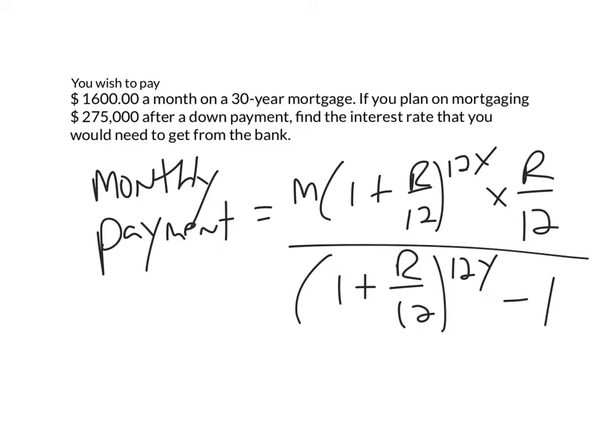And here my variables are M, R, and Y. Well, here they tell you it's a 30-year mortgage. Most mortgages are 30 years, so here our Y value is going to be 30.